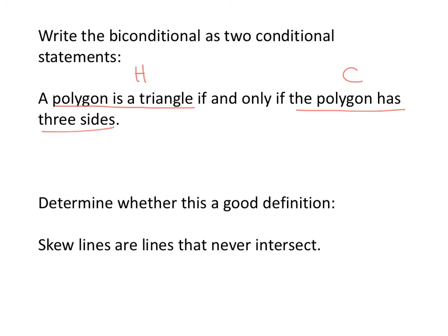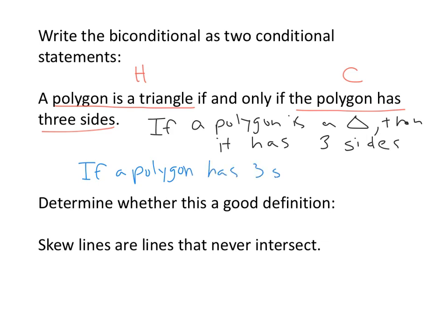To write a biconditional as two statements, I underline the hypothesis and conclusion. I'm going to do the hypothesis. If a polygon is a triangle, then it has three sides. Now I'm going to reverse it. I'm going to go backwards. I'm going to write if the conclusion, then the hypothesis. If a polygon has three sides, then it's a triangle.